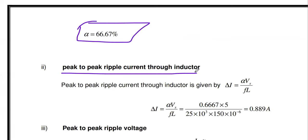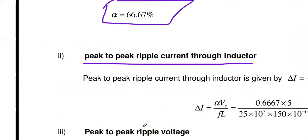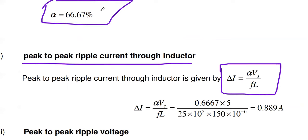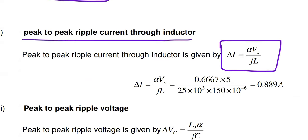For the peak-to-peak ripple current through the inductor in a boost converter: ΔI = α × Vs / (F × L) = 0.667 × 5 / (25 × 10³ × 150 × 10⁻⁶). The answer is 0.889 A. The ripple current ΔI is calculated.